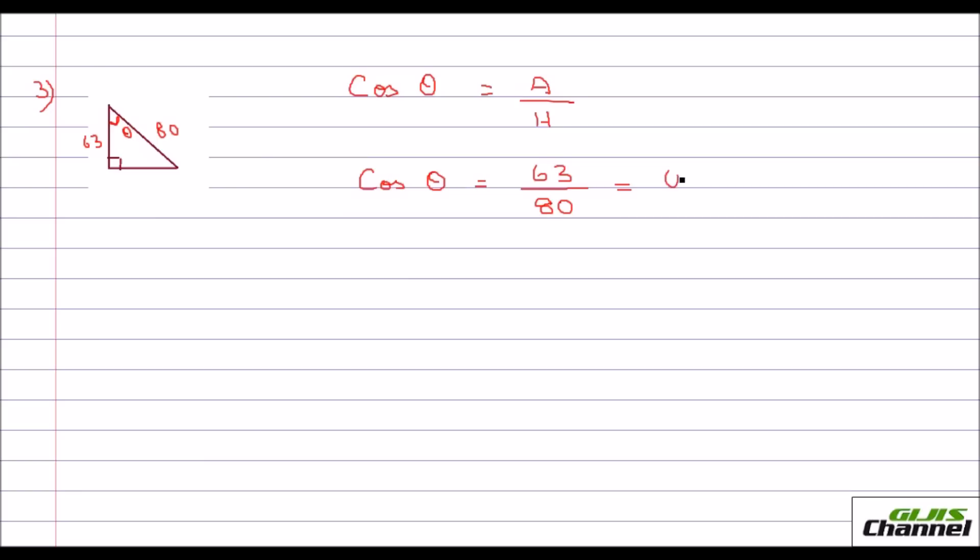0.7875. So cos theta is this. So how do you find the theta? I told you. To find the angle, you use the inverse function. So you use cos inverse of 0.7875.